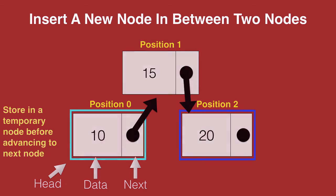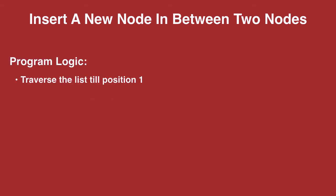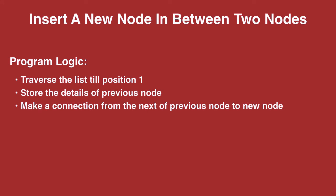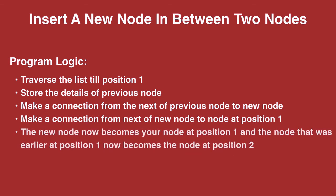Let's take a look at the program logic. We need to traverse the list till position 1, then store the details of the previous node which is at position 0. From the next of the previous node we make a connection to the new node, and from the next of the new node we make a connection to the node at position 1. So now their positions change: the new node becomes the node at position 1, and the node that was earlier at position 1 becomes the node at position 2.